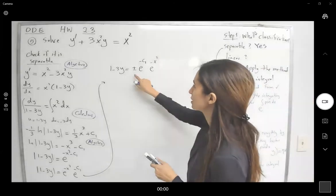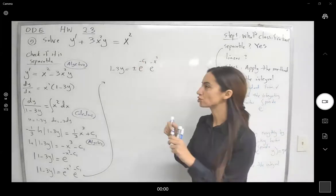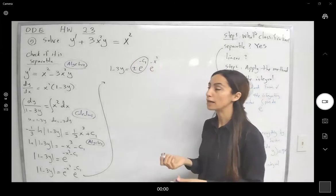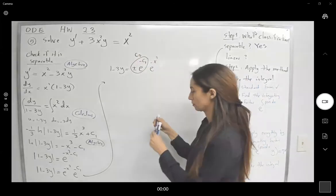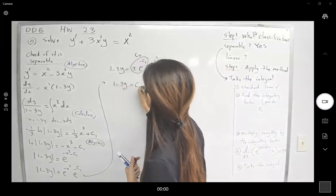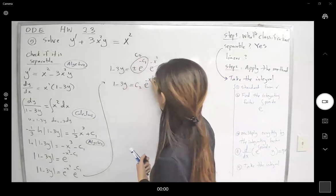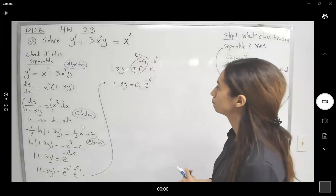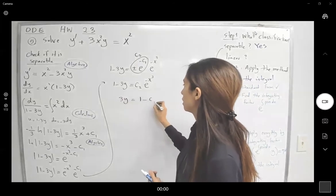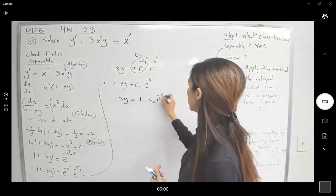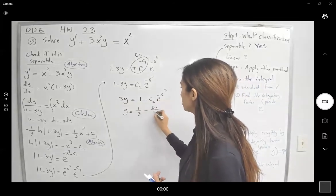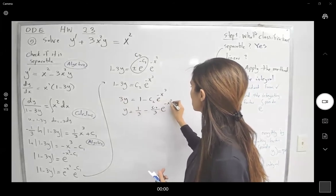Since we have a messy constant here, let us just rename it — call it c₂, or c, or k, anything you like. So we get 1 minus 3y equals c₂ times e to the power negative x cubed. Therefore 3y equals 1 minus c₂ e to the negative x cubed, and y equals one-third minus c₂ over 3 times e to the power negative x cubed.